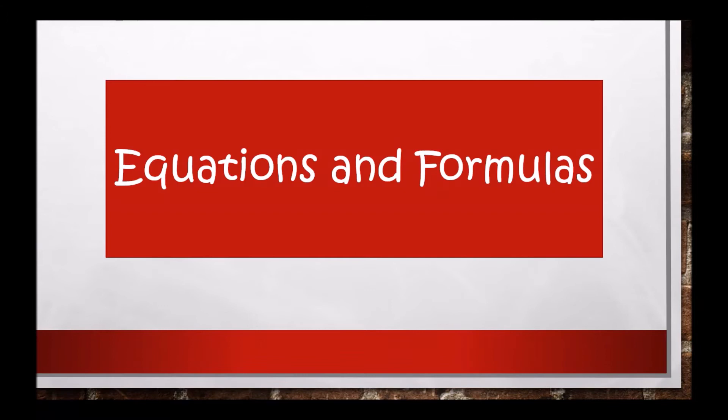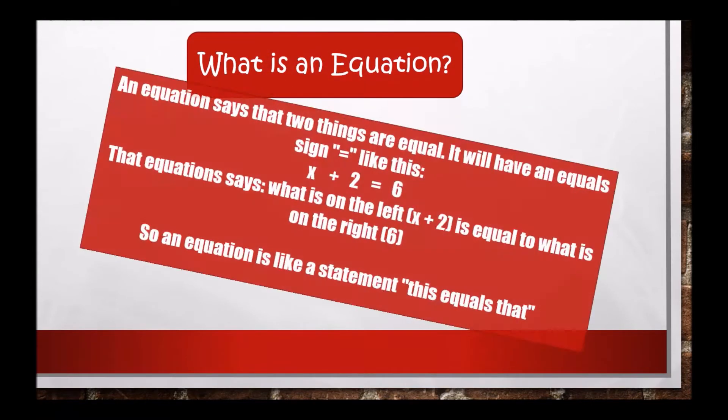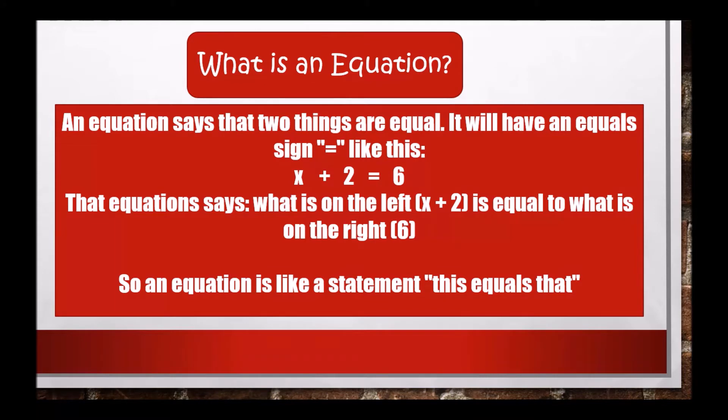How equations and formulas are framed. Now what is an equation? An equation says that two things are equal. It will have an equals sign like this, for example x + 2 = 6. That equation says what is on the left, x + 2, is equal to what is on the right, 6. So an equation is like a statement: this equals that.